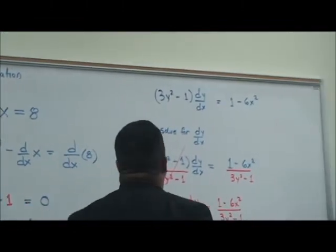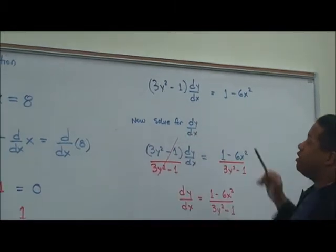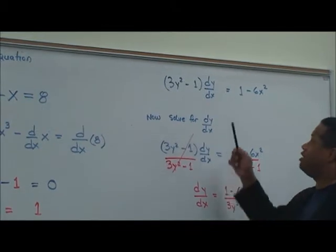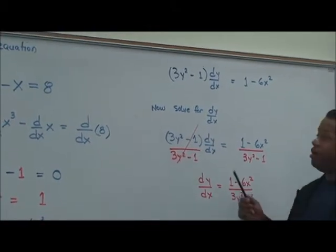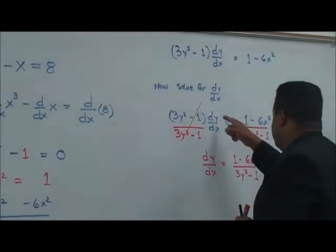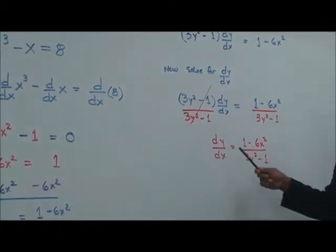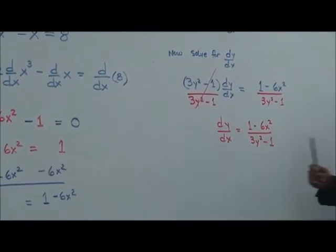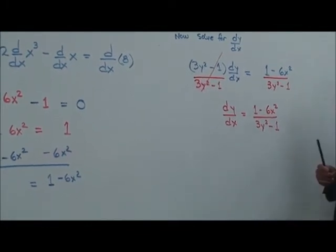So we're going to solve for dy/dx here. What we can do is divide both sides by 3y squared minus 1, and then we'll have dy over dx isolated. That's going to equal 1 minus 6x squared divided by 3y squared minus 1. That is your solution for that problem.